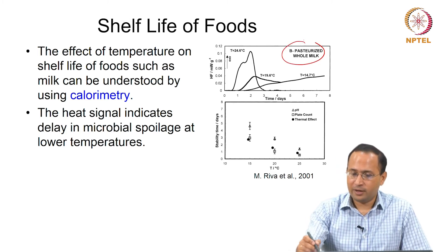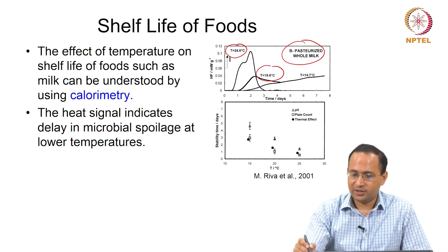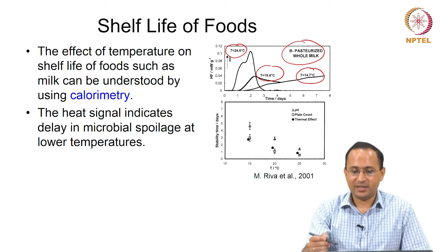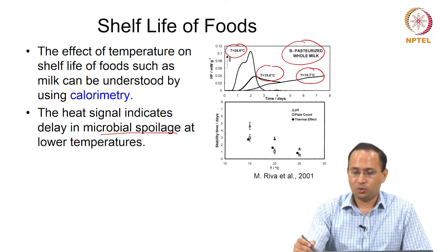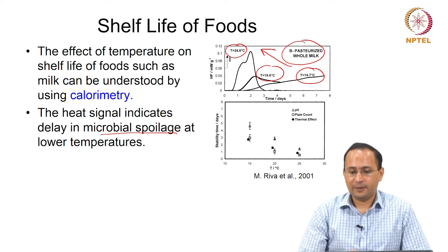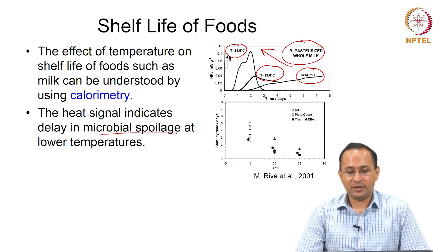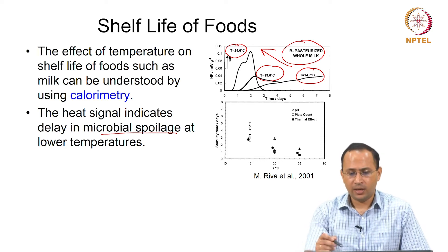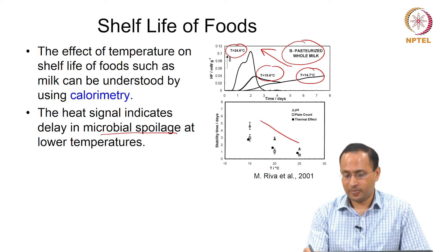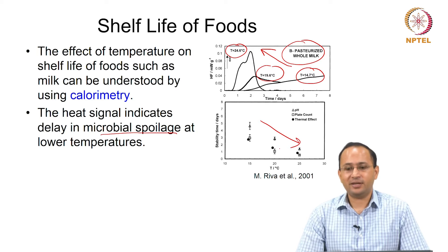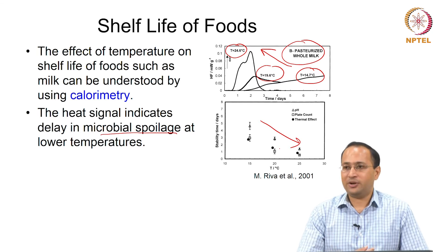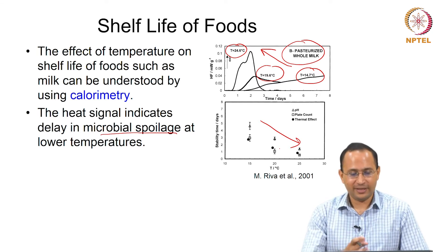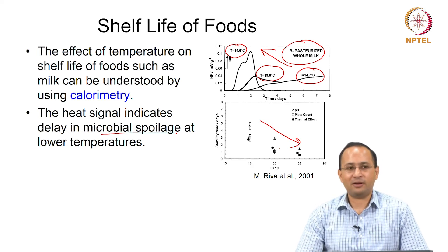In this example, we are looking at the effect of three different temperatures and how that affects heat evolution. We are talking about microbial spoilage. With the increase in temperature, we accelerate the microbial activities, which corresponds to an increase in heat. That affects the shelf life — shelf life decreases as you increase the temperature. As long as there is a heat signal, we can use calorimetry to monitor that process.